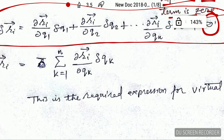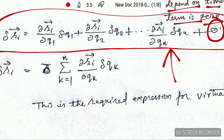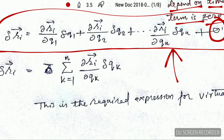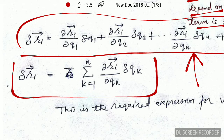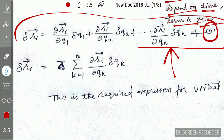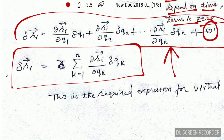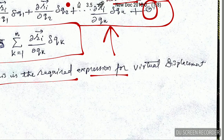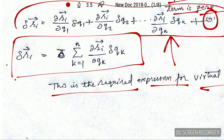We can now write the whole expression in compact form using summation. We write the same thing using summation, where k runs from k equals 1 to k equals n. This gives us the complete expression. This is the required expression for the virtual displacement: delta r_i equals the sum over k from 1 to n of (partial r_i / partial q_k) times delta q_k. Keep this expression in mind, as I will use it directly in upcoming lectures on classical mechanics.